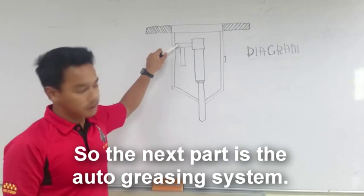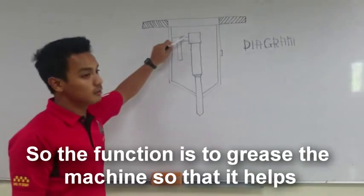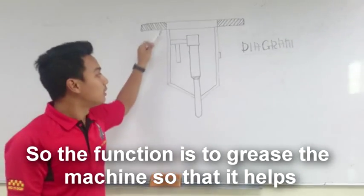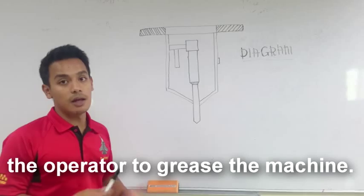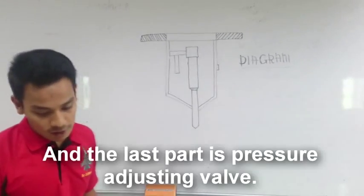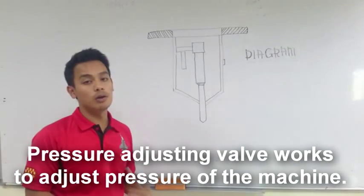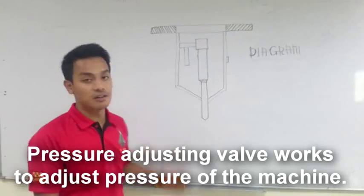The next part is the auto-greasing system. The auto-greasing system functions to grease the machine so that it helps the operator to maintain the machine. And the last part is the pressure adjusting box, which works to adjust the pressure of the machine.